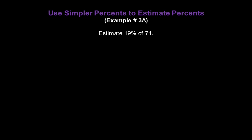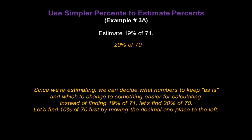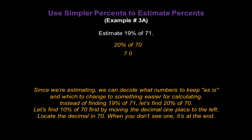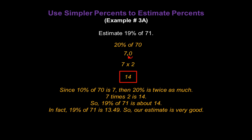Now let's estimate 19% of 71. Since we're estimating, we can decide which numbers to change to something easier for calculating. Instead of finding 19% of 71, let's find 20% of 70. Find 10% of 70 first by moving the decimal one place to the left — that gives us 7. Since 10% of 70 is 7, that means 20% is twice as much: 7 times 2 is 14. So 19% of 71 is approximately 14. In fact, 19% of 71 is 13.49, so our estimate is very good indeed.